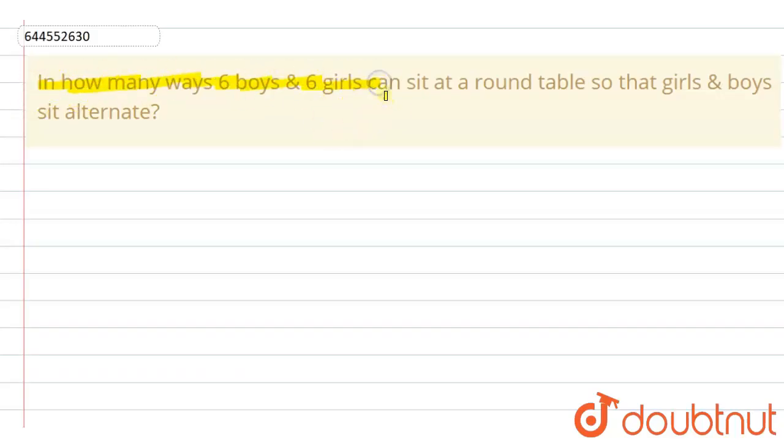in how many ways six boys and six girls can sit at a round table so that girls and boys sit alternate?